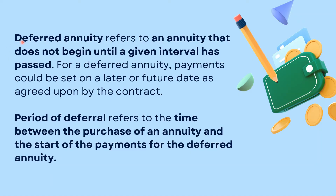Let's define what Deferred Annuity is. Deferred Annuity refers to an annuity that does not begin until a given interval has passed. For a Deferred Annuity, payments could be set on a later or future date as agreed upon by the contract. You may have encountered this type of annuity or installment where you don't start paying immediately. For example, you buy a cell phone and your first statement of account is after three months. That kind of situation where payment doesn't start right away is called a Deferred Annuity.